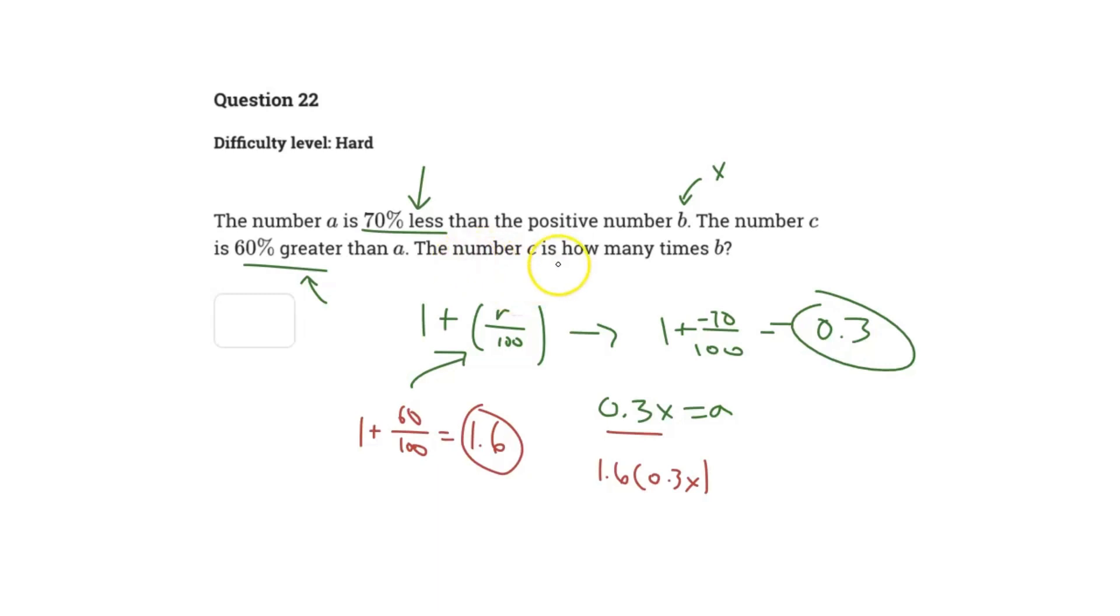It asks, the number C is how many times B? Well, it's a pretty simple question here because we know x is the same thing as B, so we just have to find out how this percent multiplier affects that.